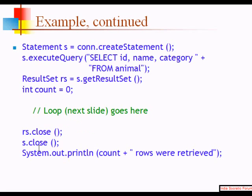Looping inside the ResultSet (rs), close it and print out. So looping here — you have to write the code for the columns and how to display them.